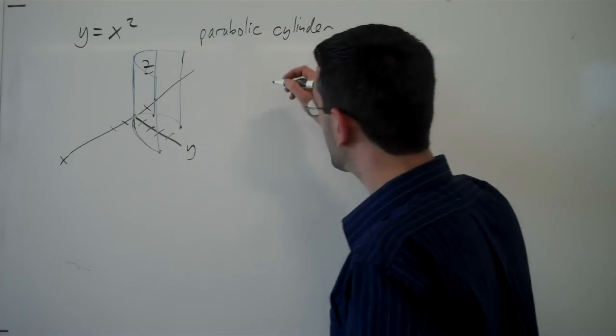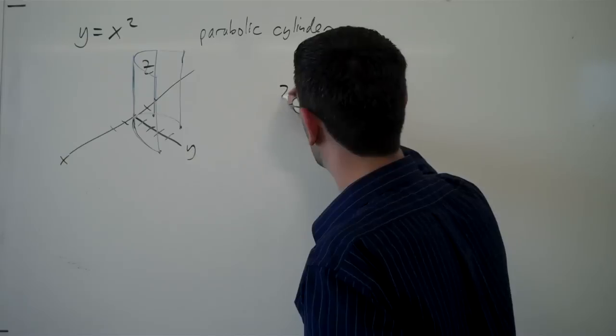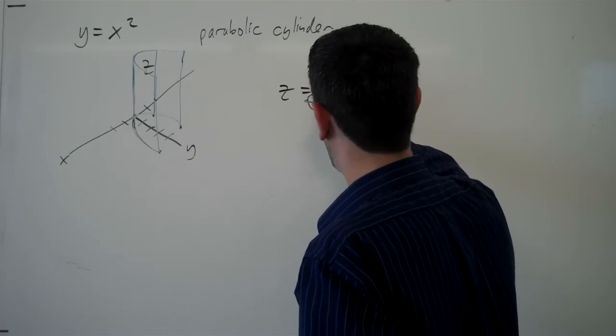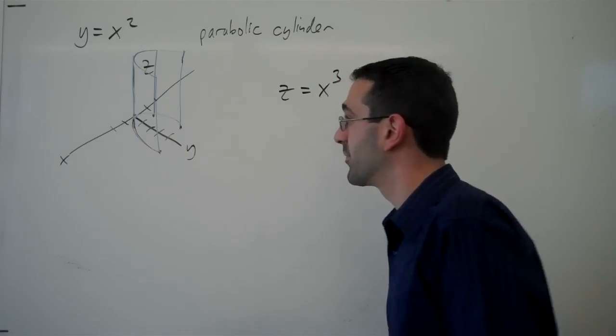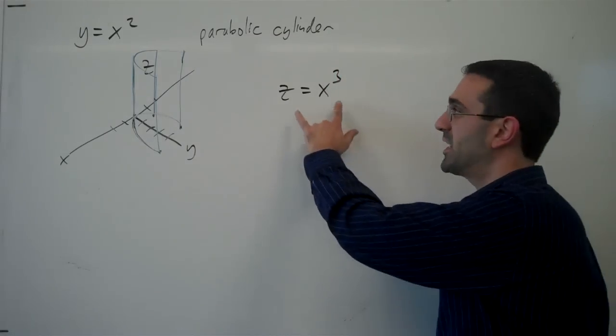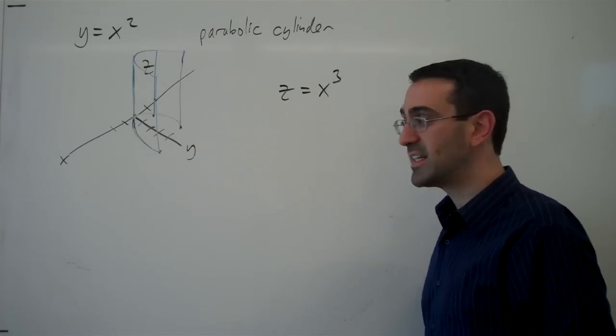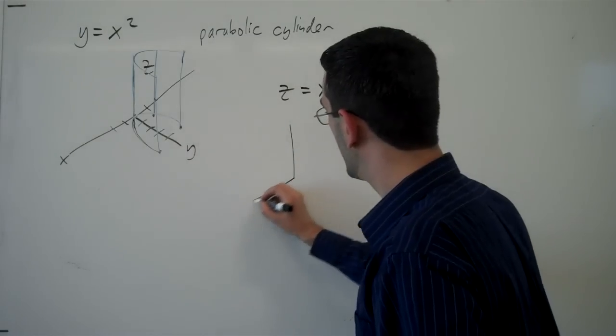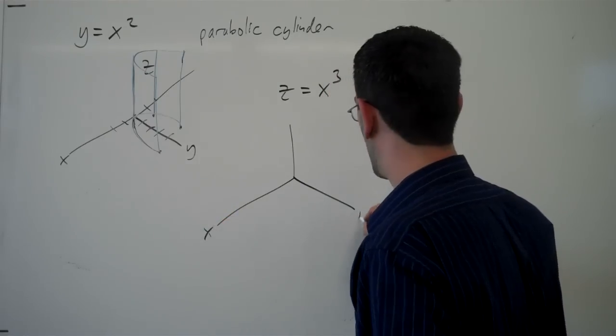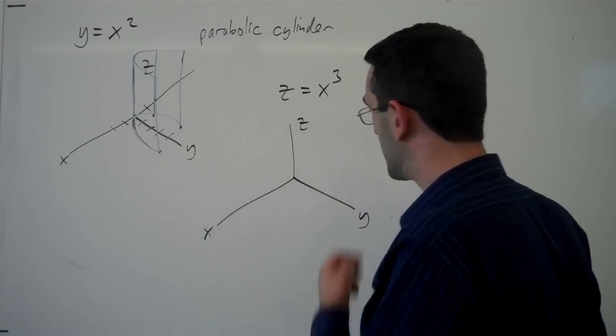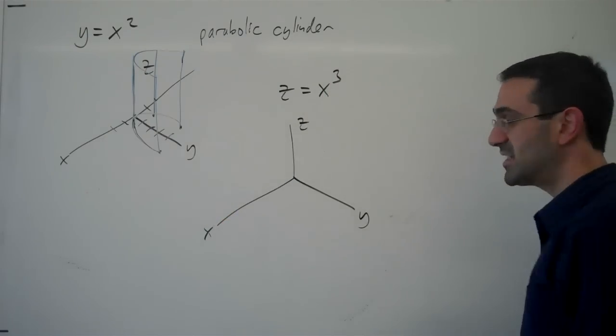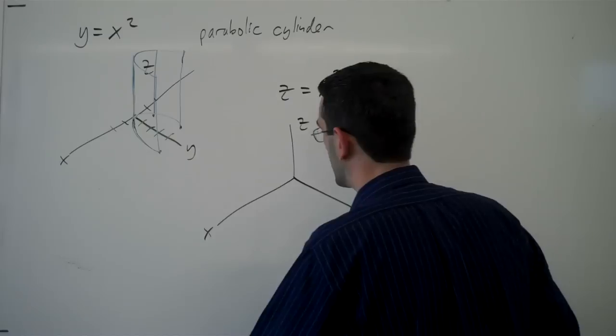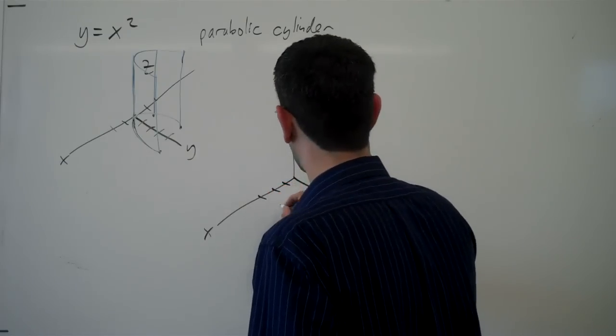Now, how would we have something different if we had, let's say, z equals x cubed? So now we have a relationship between x and z and y we're allowing to take on any value. So in x and z we're going to have a cubic relationship.